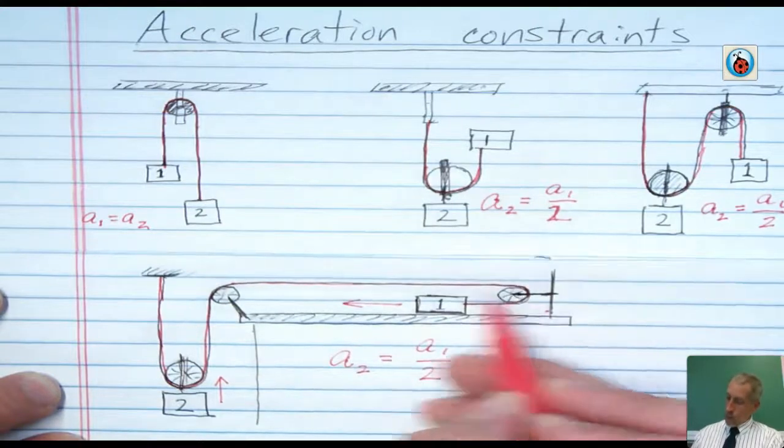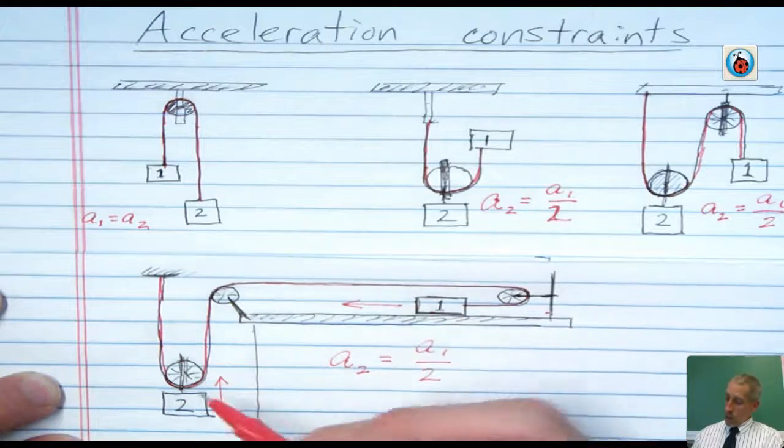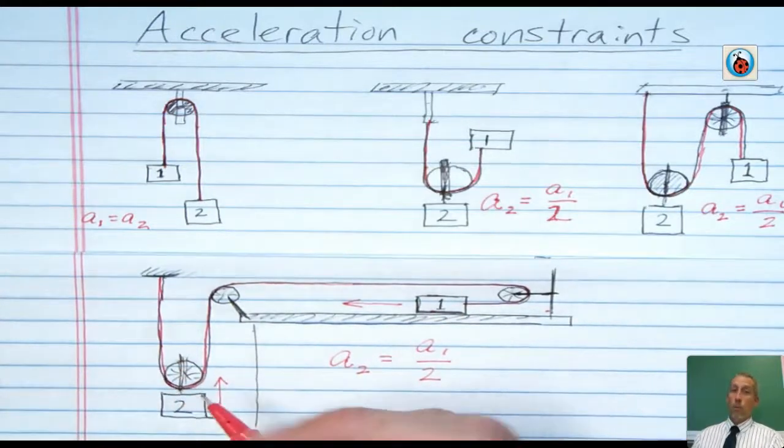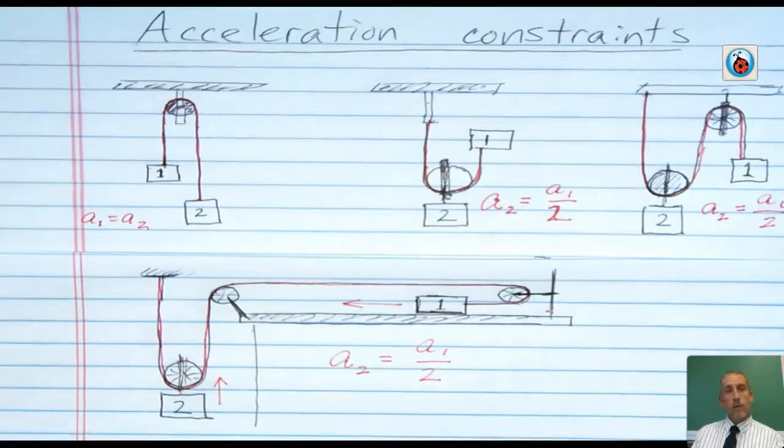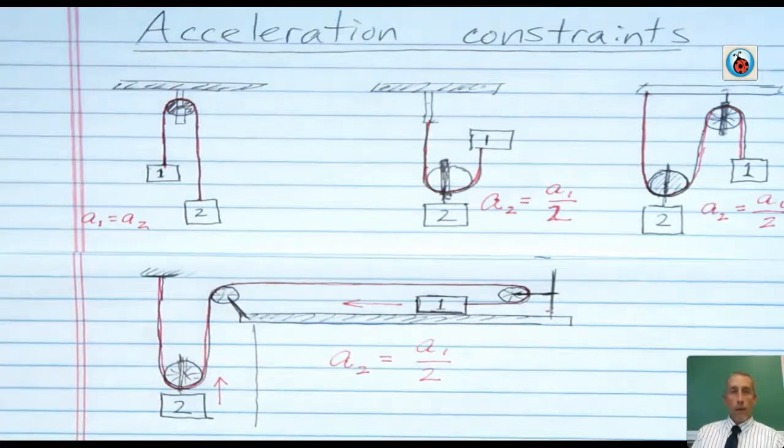Again, we've got fixed pulleys here and here that do nothing but change the direction of the force. It's only by attaching a mass to the movable pulley that we're going to get some difference in the distance traveled by each of those objects. So let me show you here what this looked like when I recorded it in the laboratory.